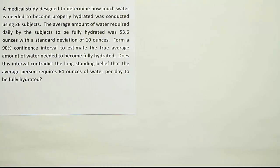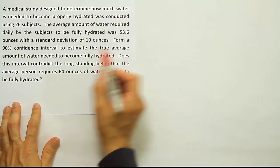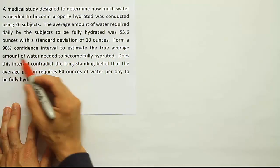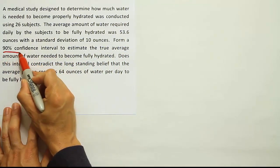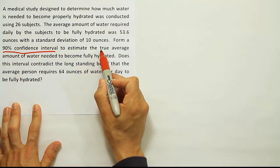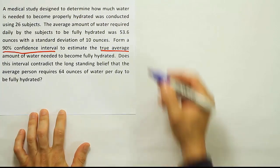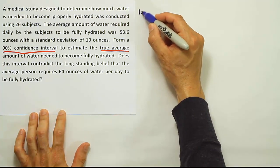Let's identify the important key phrase here. It says form a 90% confidence interval to estimate the true average amount of water. So it's a 90% confidence interval problem, and we're looking to estimate the true average. The next step is to start working out the confidence interval, applying the four steps we learned for that problem. The first thing we want to do is record the data.